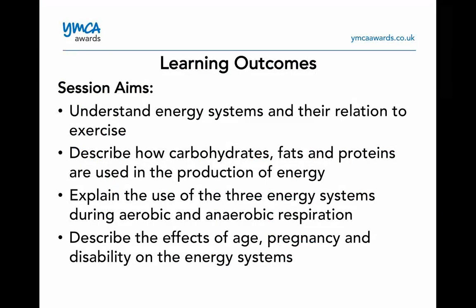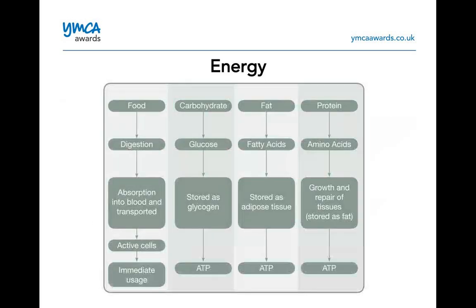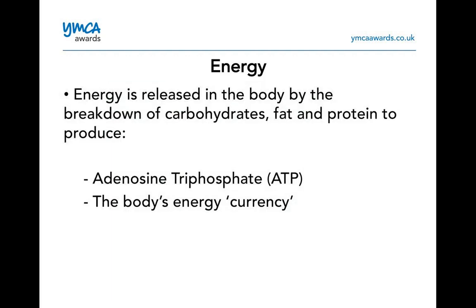Energy systems: energy comes from the food we eat — carbohydrates, fats, and protein. Carbohydrates are stored in the muscle and liver cells in the form of glycogen. Fats are stored as adipose tissue. Proteins are used as building materials for growth and repair. Energy is released into the body by the breakdown of carbohydrates, fats, and proteins to produce adenosine triphosphate — ATP — which is basically the body's energy currency.